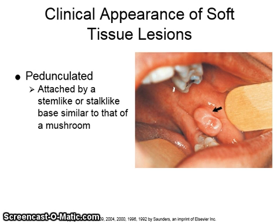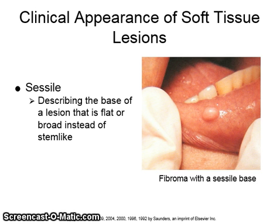A pedunculated lesion appears to be attached to the underlying mucosal tissue by a stem-like or stalk-like base, similar to that of a mushroom. The picture on the right shows the arrow pointing to the stalk-like base. Sessile describes the base of a lesion that is flat or broad instead of stem-like. The image on the right shows a fibroma with a sessile base.